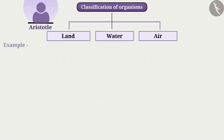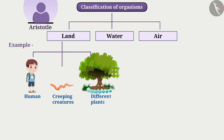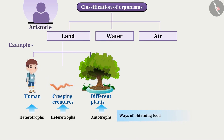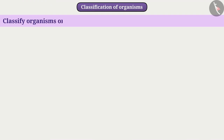For example, various organisms like humans, creeping creatures, different plants, etc. live on land, but there are quite a few variations except the place of living. Therefore, classification of organisms based on habitat can be misleading.